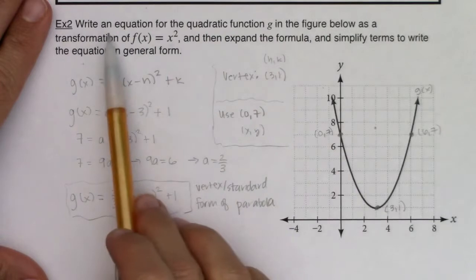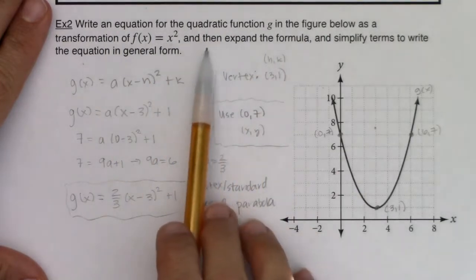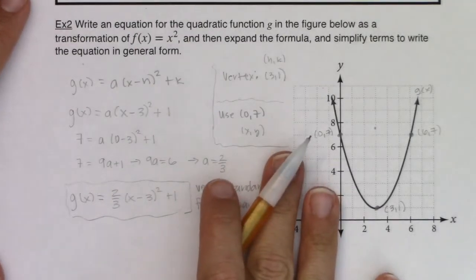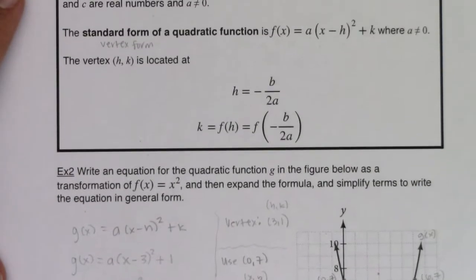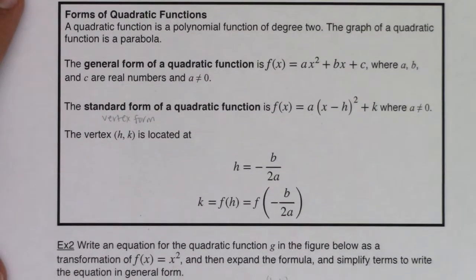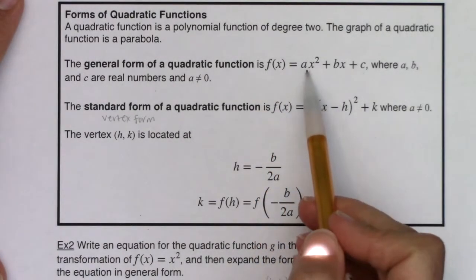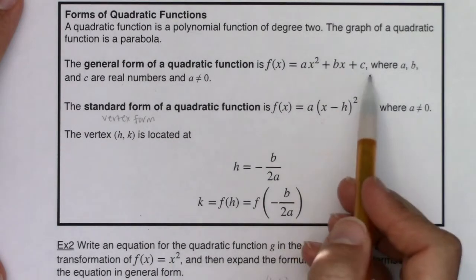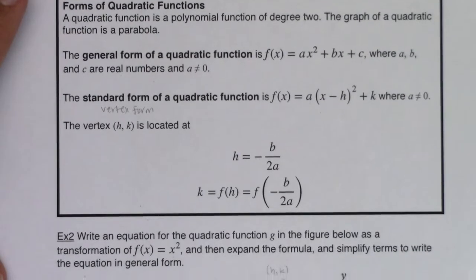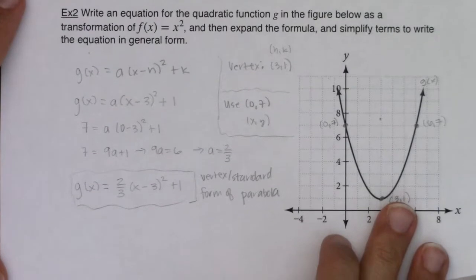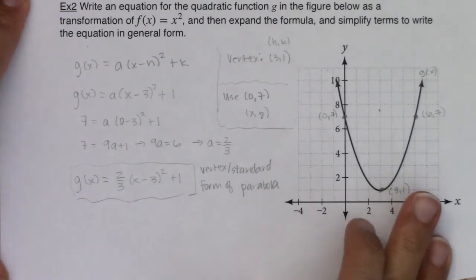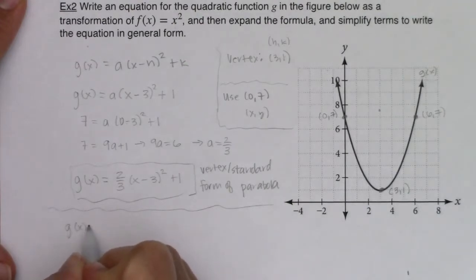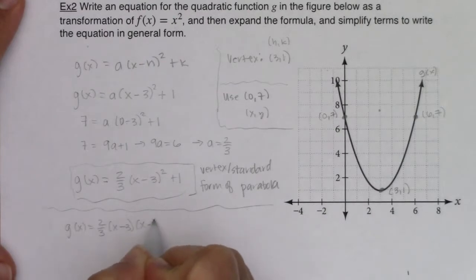Now that's fine and good. This said to write the equation for the quadratic function, which I did. But then it says expand the formula and simplify the terms to write the equation in general form. And again, I just want to remind you, I'm going to scooch this back down so we can see what general form looks like. If I want my parabola or the equation of my parabola to be in general form, I need ax² + bx + c. All I know so far is a. I happen to know a is equal to 2/3, but I don't know b and c, so I'm going to multiply everything out. So let's see what happens when we expand this.